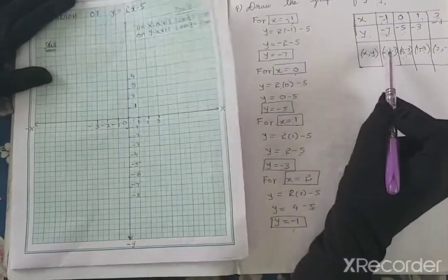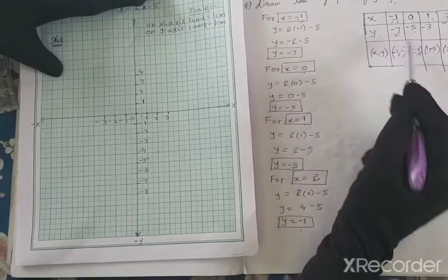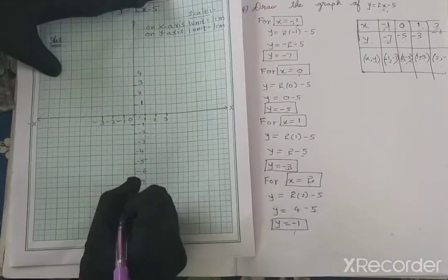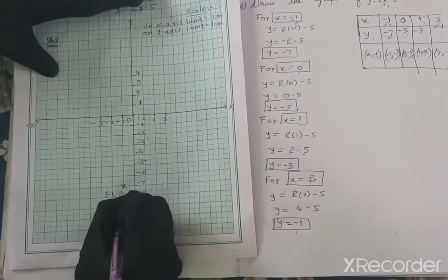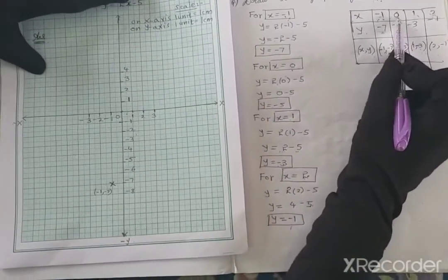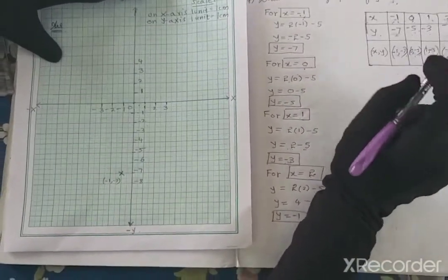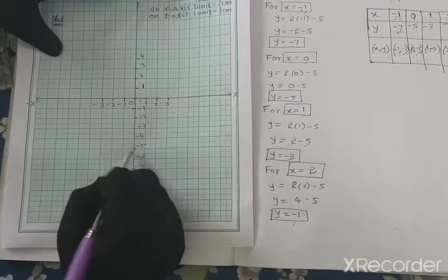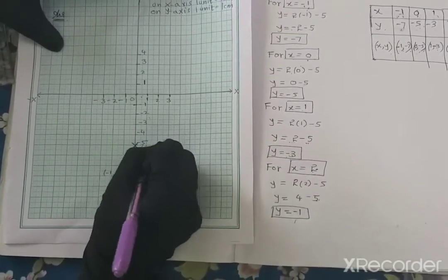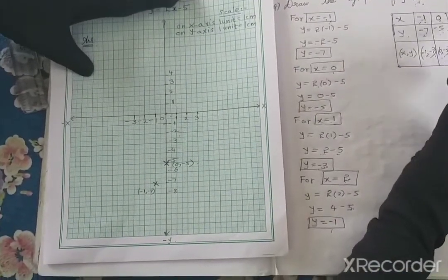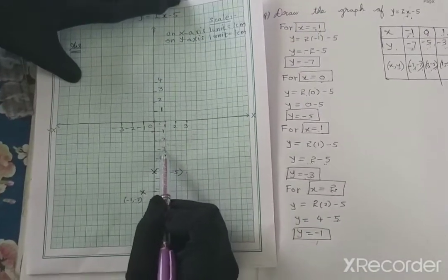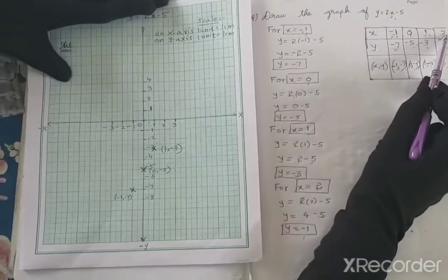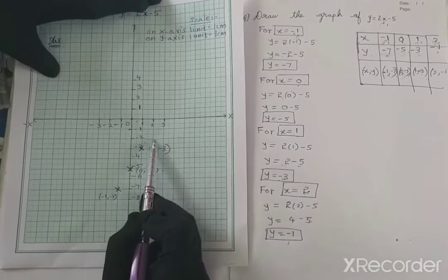Now let's start plotting the points. The first point is when x is minus 1, y is minus 7 — mark that point. Second point is when x is 0, y is minus 5. Since x is 0, the point will lie on the y-axis at minus 5. Third point is when x is 1, y is minus 3. Fourth point is when x is 2, y is minus 1.